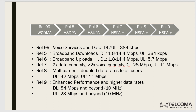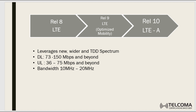3GPP then moved on to a much better technology called LTE, which stands for Long-Term Evolution. Along with Release 8, 3GPP released the standard for the first LTE technology, which leverages a new wider TDD spectrum. In the initial release, downlink speeds were around 73–150 Mbps and uplink 36–75 Mbps. The bandwidth utilized by LTE is from 10 MHz to 20 MHz, whereas a WCDMA channel is only 5 MHz.